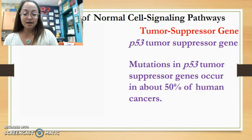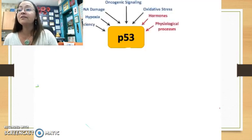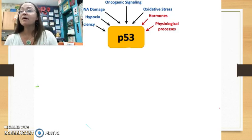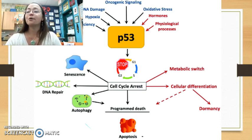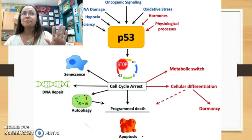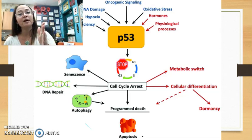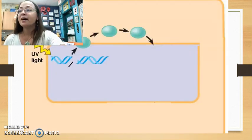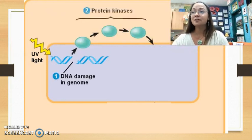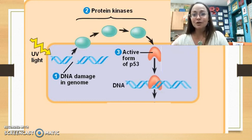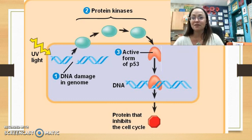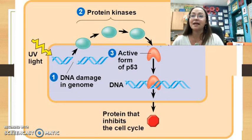The main tumor suppressor gene is P53. When there are stresses coming into the cell — such as DNA damage — P53 stops the cell cycle to fix things, either through DNA repair or programmed cell death. P53 acts as a transcription factor to turn on gene expression for proteins that stop the cell cycle, ensuring only good, healthy cells proceed from G1 into S phase. A protein kinase activated by DNA damage will activate P53 to carry out this function.